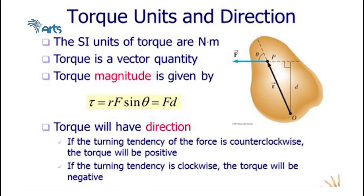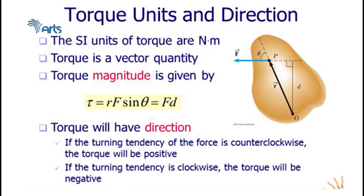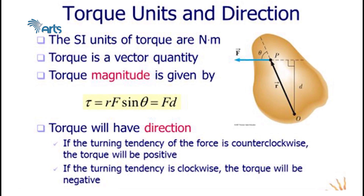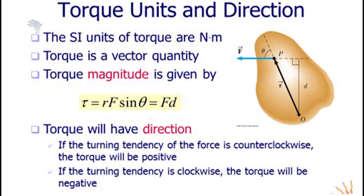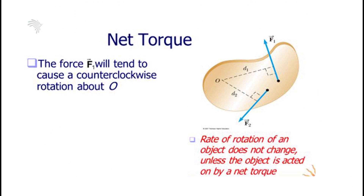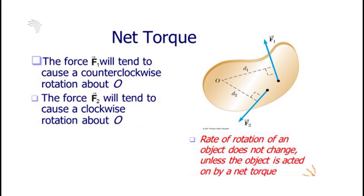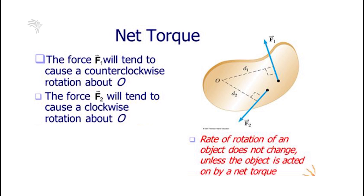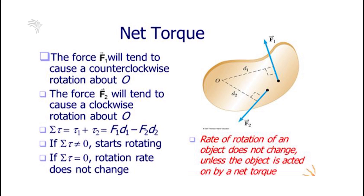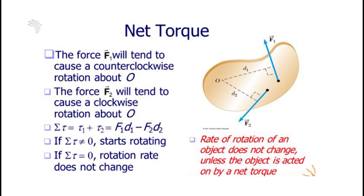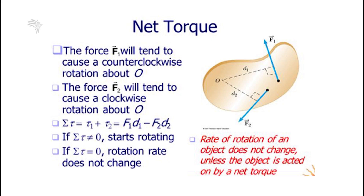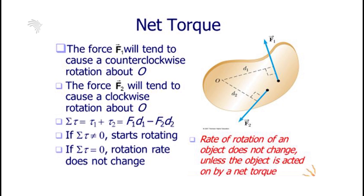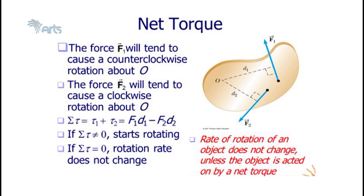For the direction of torque: if the turning tendency of the force is counterclockwise, torque is positive; if clockwise, it is negative. For a rigid body with two forces F1 and F2 applied about origin O, F1 tends to cause counterclockwise rotation and F2 tends to cause clockwise rotation. The net torque is the sum tau1 plus tau2. If the net torque is nonzero, the rigid body starts rotating. If the net torque equals zero, the rotation rate does not change — the rate of rotation of an object doesn't change unless acted on by a net torque.